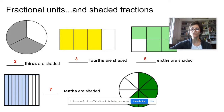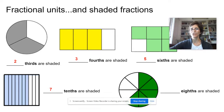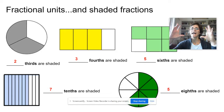And the last one — in how many parts did I divide my circle? How many equal parts? There are eight parts, so the fractional unit is eighths. How many of these are shaded? One, two, three, four, five — five eighths are shaded. So I hope you understand what a fractional unit is. Think of the fraction and see how many equal parts the whole has been divided into.